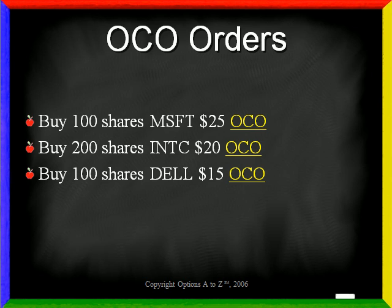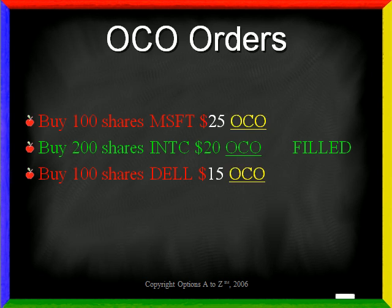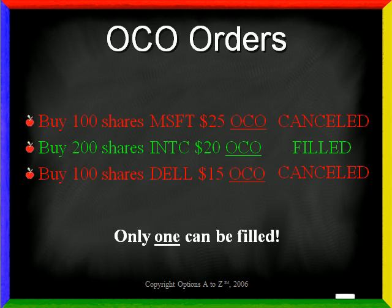OCO orders also work with multiple orders. For instance, assume you placed three orders with the OCO condition. If the second order fills, then the other two are cancelled. If any single order fills, the remaining orders are cancelled. The important thing to understand about OCO orders is that only one order, if any, can be filled. However, there is one caveat: if your limit prices are all very close to current market prices, then it is possible to get multiple orders filled, because other orders may fill during the few seconds it takes the computer to submit the cancellation request. Be sure your limit prices are sufficiently far from current market prices to make the best use of OCO orders.